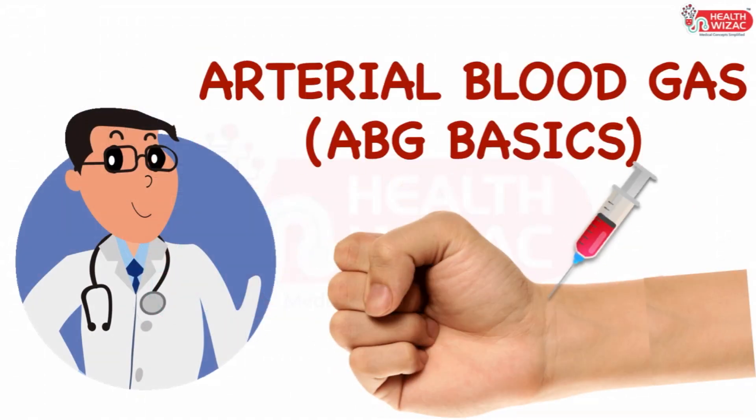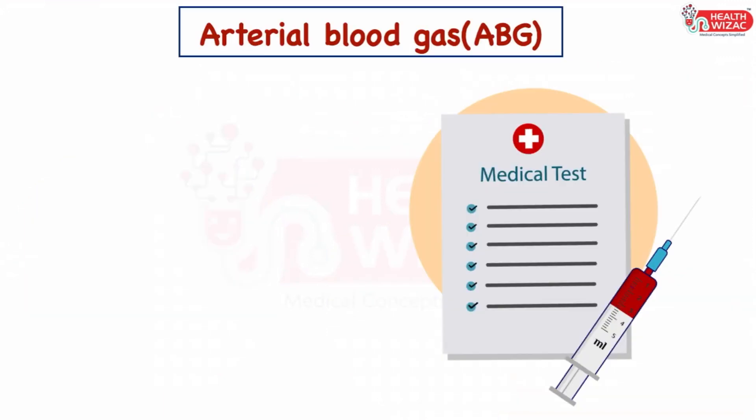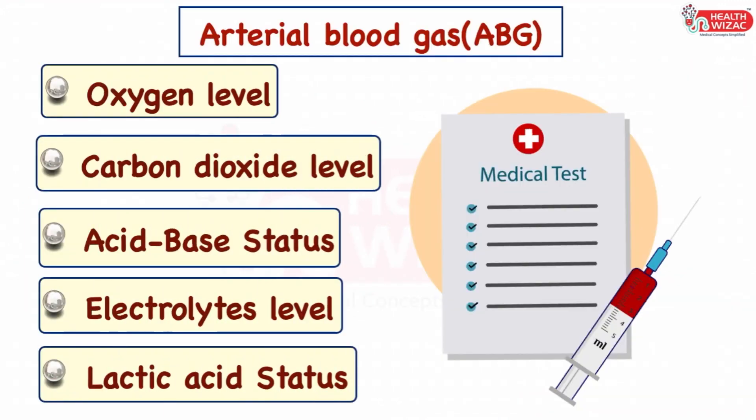ABG or arterial blood gas is an important blood investigation which gives us insights about the blood gases like oxygen, carbon dioxide, and also the acid-base status. It also reflects electrolyte levels and lactic acid status present in the blood.